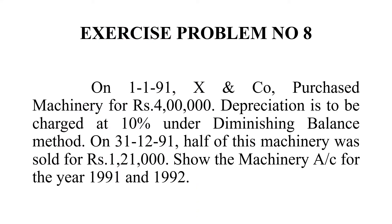In the problem, the diminishing balance method, also known as the written down value method. They have purchased machinery for 4,00,000 and the rate of depreciation is 10%. They have sold the machinery for 1,21,000 on 31-12-91. Show the machinery account for the years 1991 and 1992.